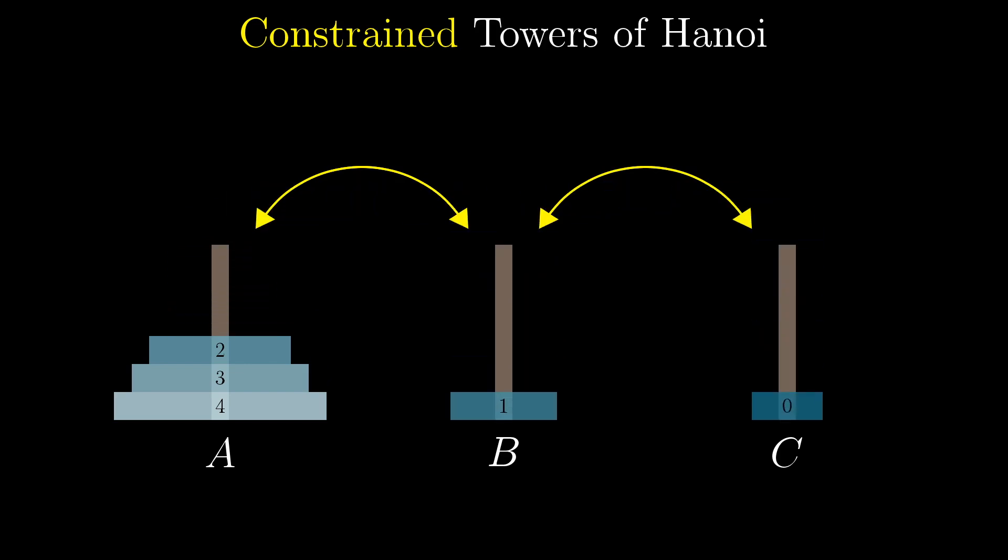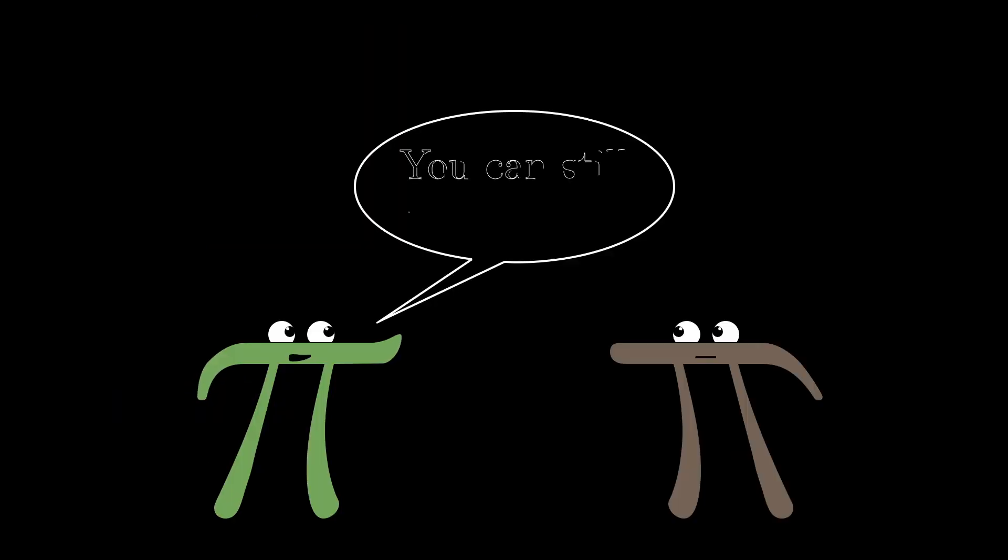And so now the question is solve Towers of Hanoi. For example, like in the previous one, we start by moving disk zero to B and the next move was to move disk one over to C, but you can't do that because you can't get one straight over to C. So it's more complicated.